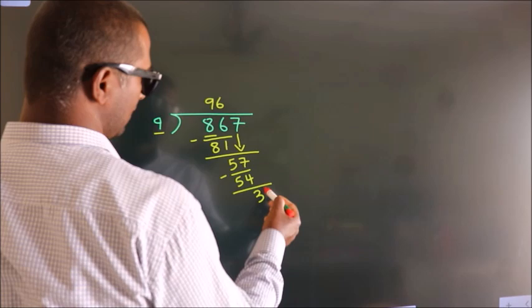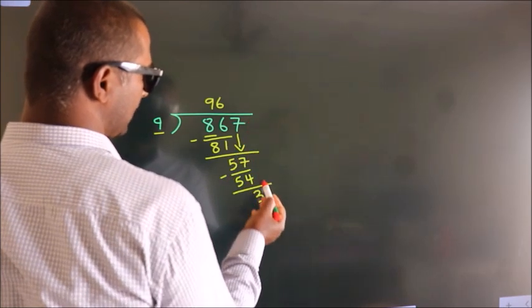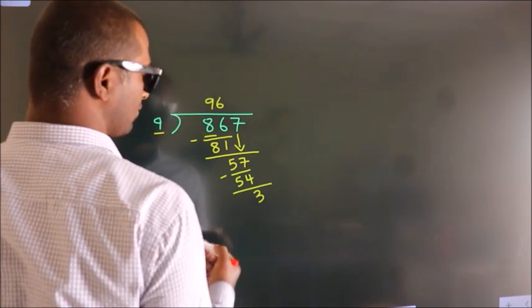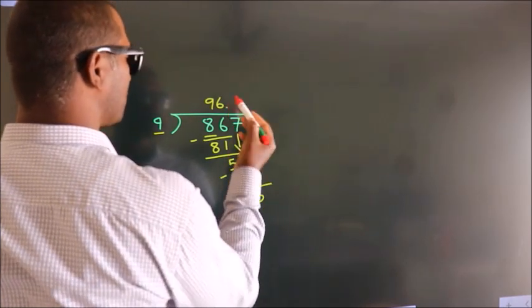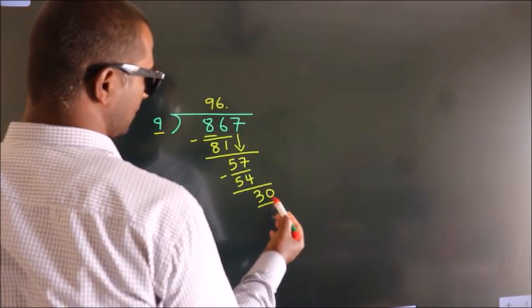After this, no more numbers to bring it down. So what we do is we put a dot and take 0, so 30.